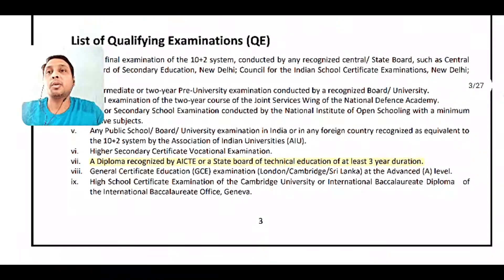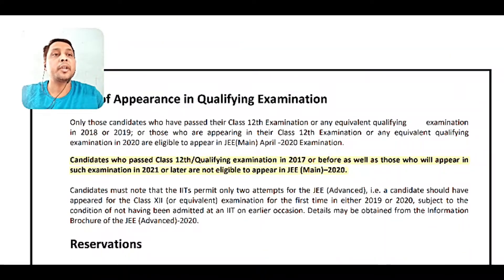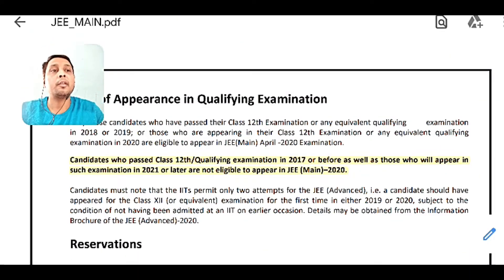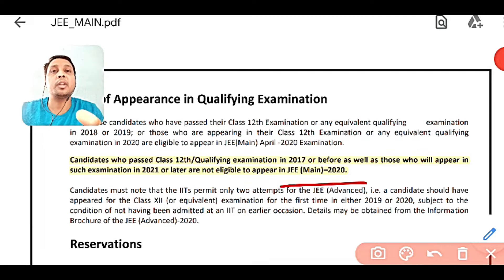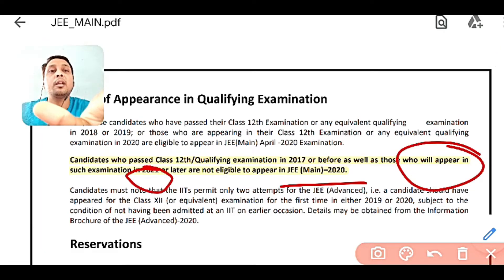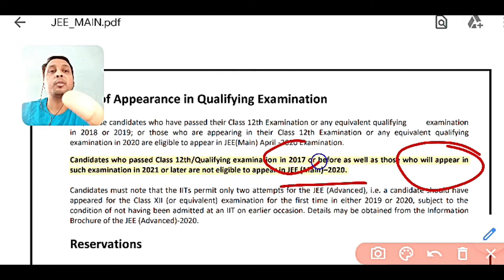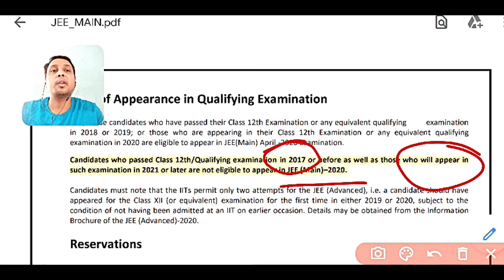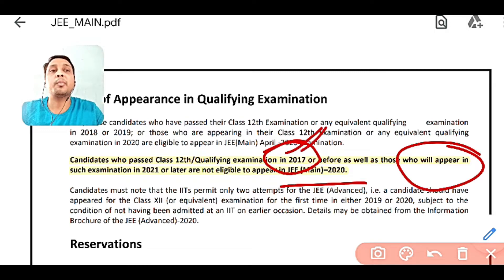Now let's look at year of passing for JEE Main 2020. If you are appearing in 2021 you cannot apply, and if you appeared before 2017 you also cannot apply. If you are in diploma final year and appearing in 2020, you can appear. If you appeared in 2019 or 2018, you can also appear.